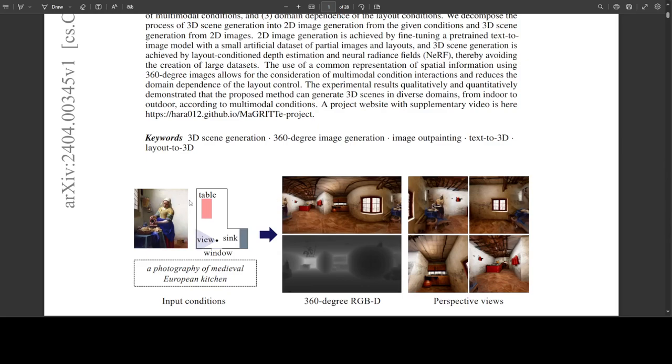Here you can see that there is a top view and this is a partial image, and layout information is in the top view and text prompts. Their method generates a 3D scene represented by the 360-degree RGBD and NeRF. Also, free perspective views can be rendered from the NeRF model.